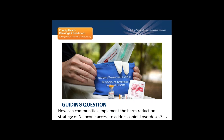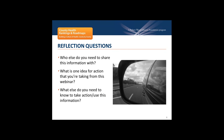This is the question that will guide our webinar today: How can communities implement the harm reduction strategy of naloxone access to address opioid overdoses? We know there's work happening in this area across the country. If there are examples you'd like to share about what's worked in your community, feel free to use the question box. As we move into the real content, consider these questions: Who else do you need to share this information with? What's an idea for action you're taking from this webinar?